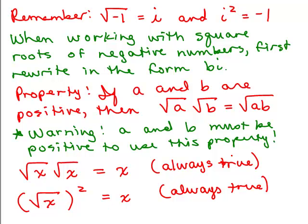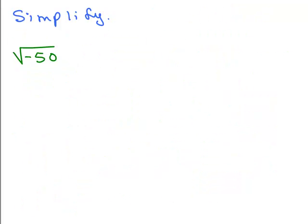Now, keeping these in mind, we're going to try some problems. We're going to simplify using the rules and properties I just went over. Try this one: square root of negative 50. Put the video on pause and try it by yourself first.